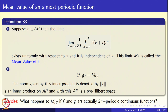What is the mean value of an almost periodic function? Suppose f is almost periodic. We look at the limit as T goes to infinity of 1/(2T) times the integral from minus T to T of f(x+t) dt. If the function is almost periodic, this limit is independent of x and the limit exists uniformly with respect to x. The T_0 in the epsilon definition will be independent of x — that is the uniformity. This limit is called the mean value of the almost periodic function f.